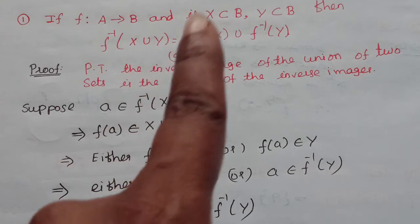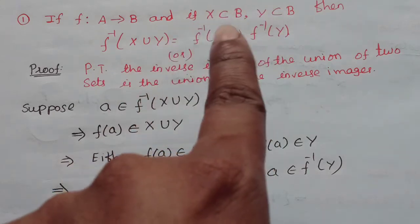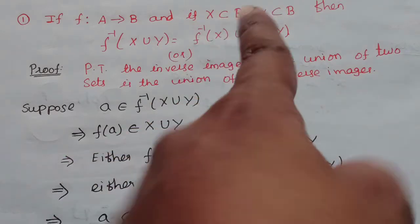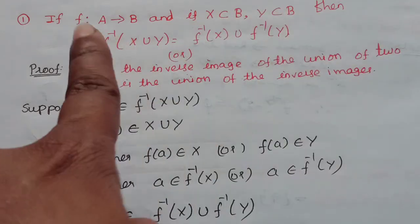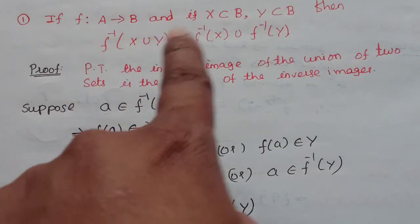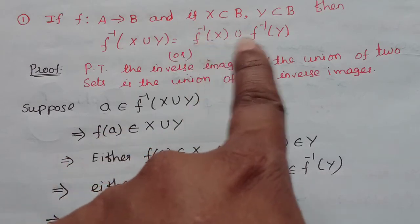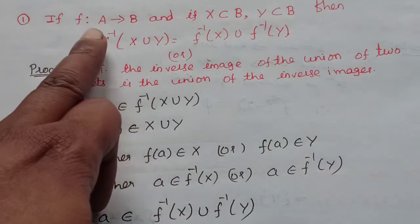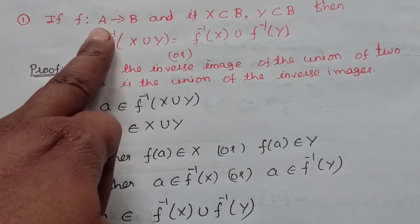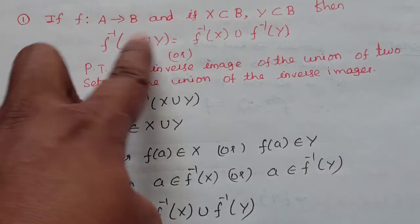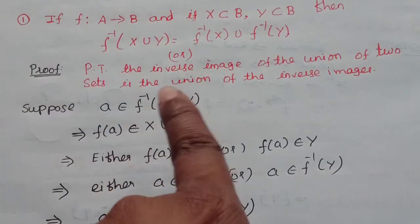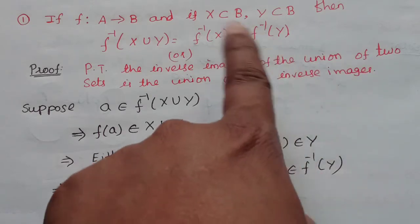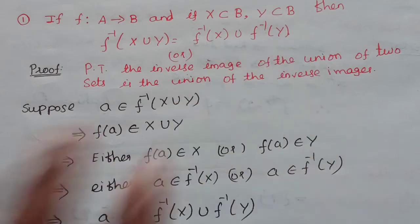If f is from a to b, and if X is a subset of b and Y is also a subset of b, then f inverse of X union Y equals f inverse of X union f inverse of Y. This is the union of two sets equal to the union of the inverse images.